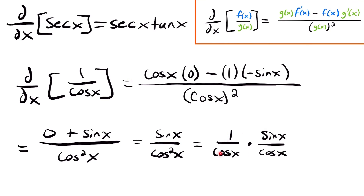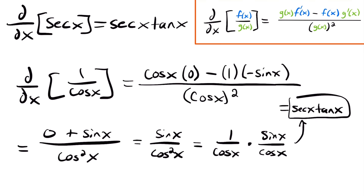That allows us to define secant, which is 1 over cosine, and tangent, which is sine x divided by cosine x. If we were to multiply these two fractions together, we would get sine times 1 is sine, and two cosine functions, so it would be cosine squared. So we are allowed to split this up in order to redefine it. And then finally, this is equal to secant x times tangent x, and that is how we show that the derivative of secant x equals secant x times tangent x.